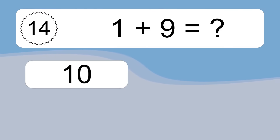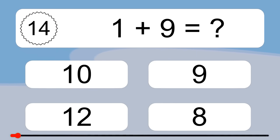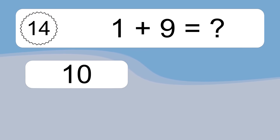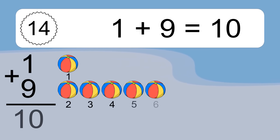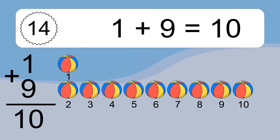1 plus 9 equals what? 1 plus 9 equals 10. Let's count it: 1, 2, 3, 4, 5, 6, 7, 8, 9, 10.